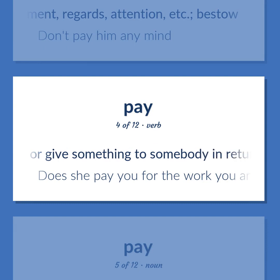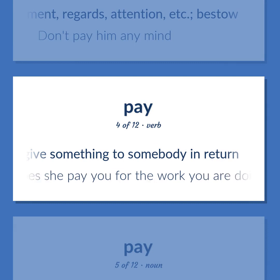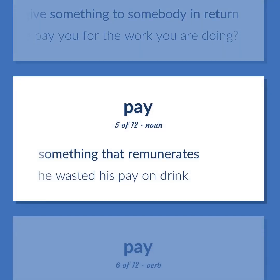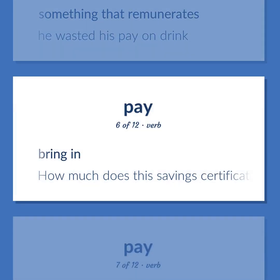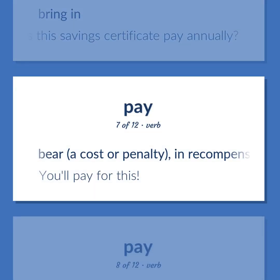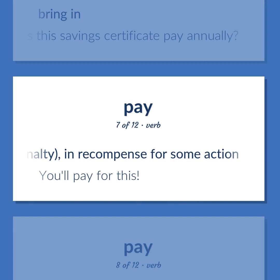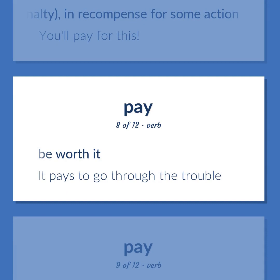Do or give something to somebody in return. Does she pay you for the work you are doing? Something that remunerates. He wasted his pay on drink. Bring in. How much does this saving certificate pay annually? Bear a cost or penalty in recompense for some action. You'll pay for this. Be worth it. It pays to go through the trouble.